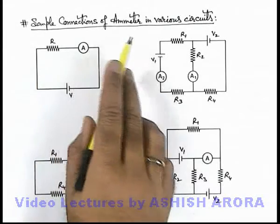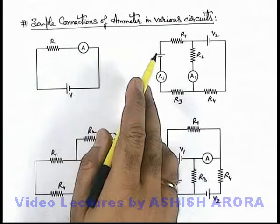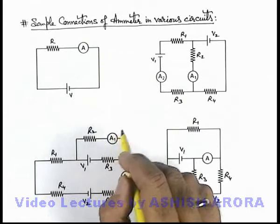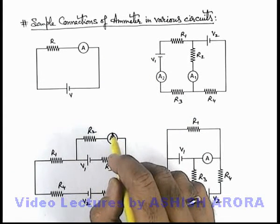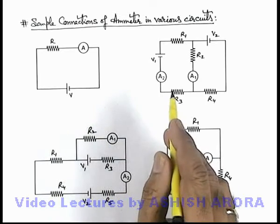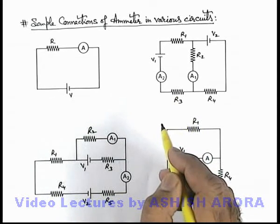Let us discuss the simple connections of ammeter in various circuits. As we have already discussed in previous section, ammeter is generally connected in series combination in the branch where current is required to be measured.